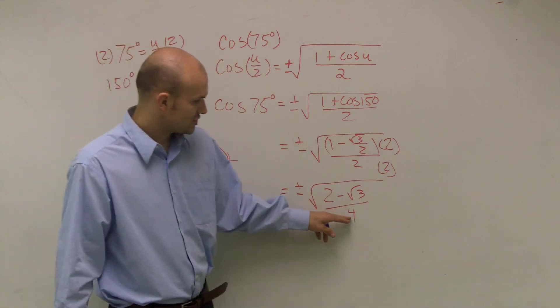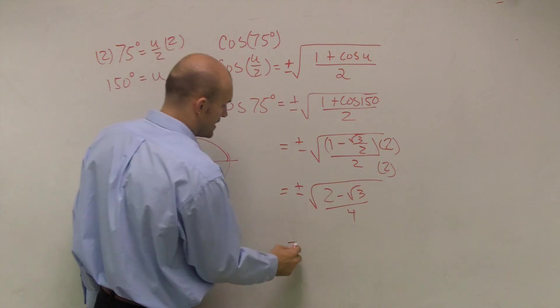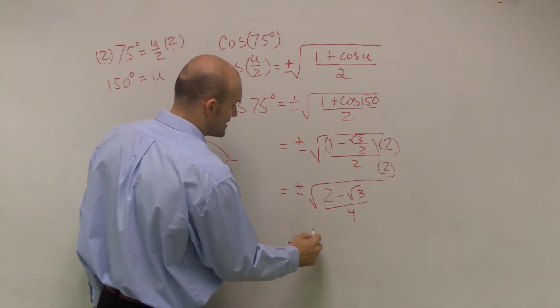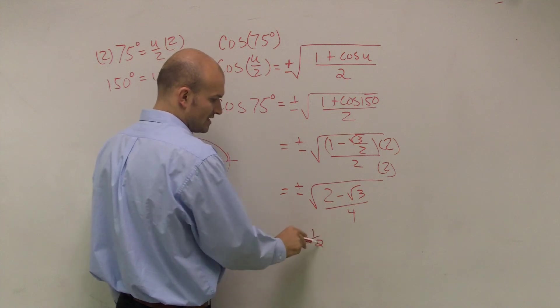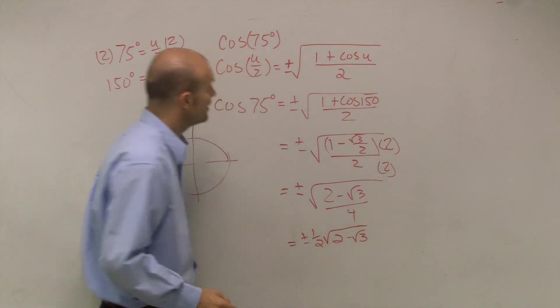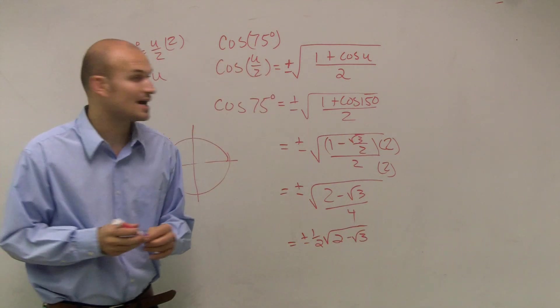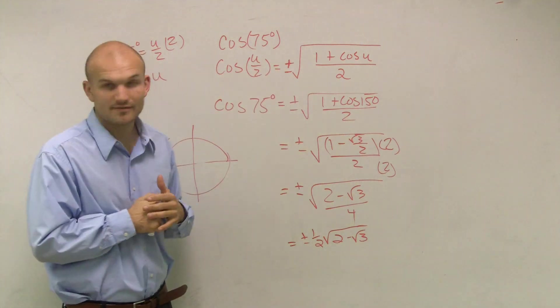Now what I can do is extract the square root of the denominator of 4, and I can get my final answer is plus or minus 1 half, because the square root of 4 is 2, but it's still in the denominator, times 2 minus radical 3. And there you go. That's how you find the half angle of your cosine of 75 degrees.